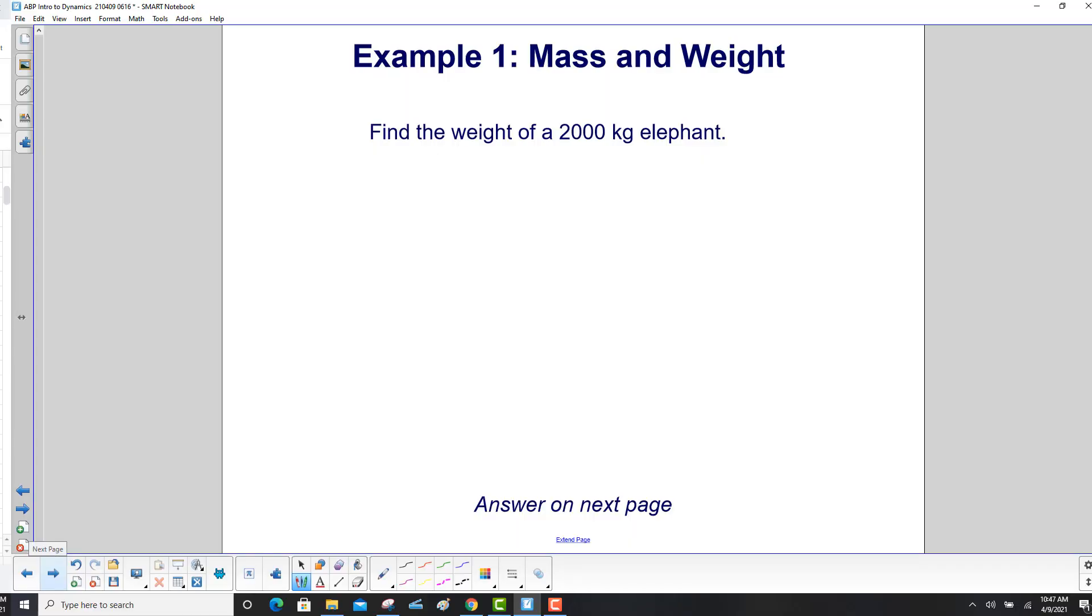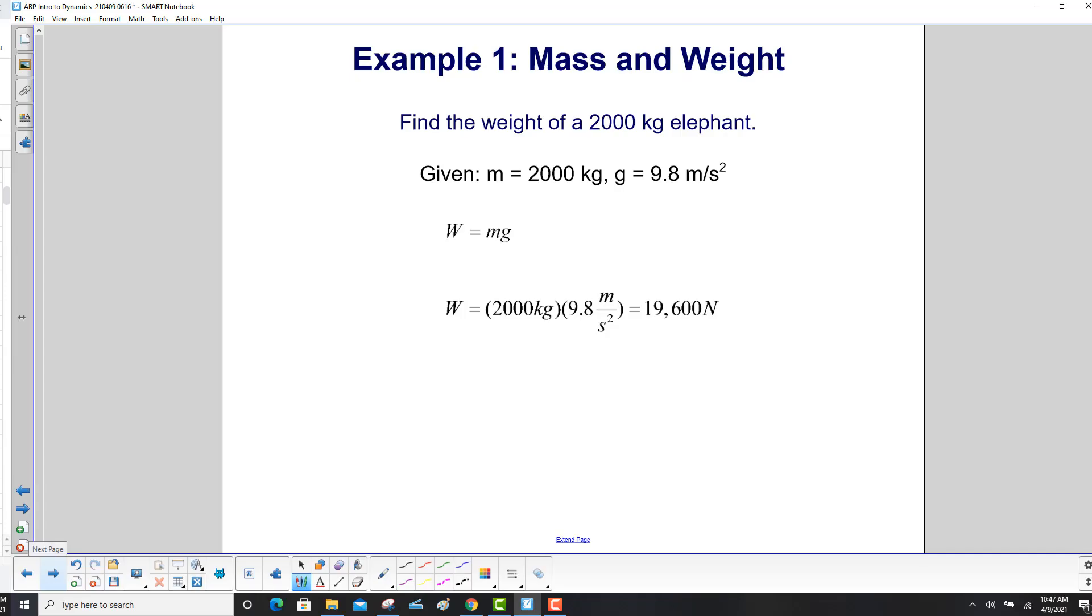Example 1. Find the weight of a 2,000 kilogram elephant. We list our givens right here. We have mass and we have g. And the weight is just mg. So it's 2,000 kilograms times 9.8 meters per second squared. And we get 19,600 newtons. Remember, please, weight is in newtons.